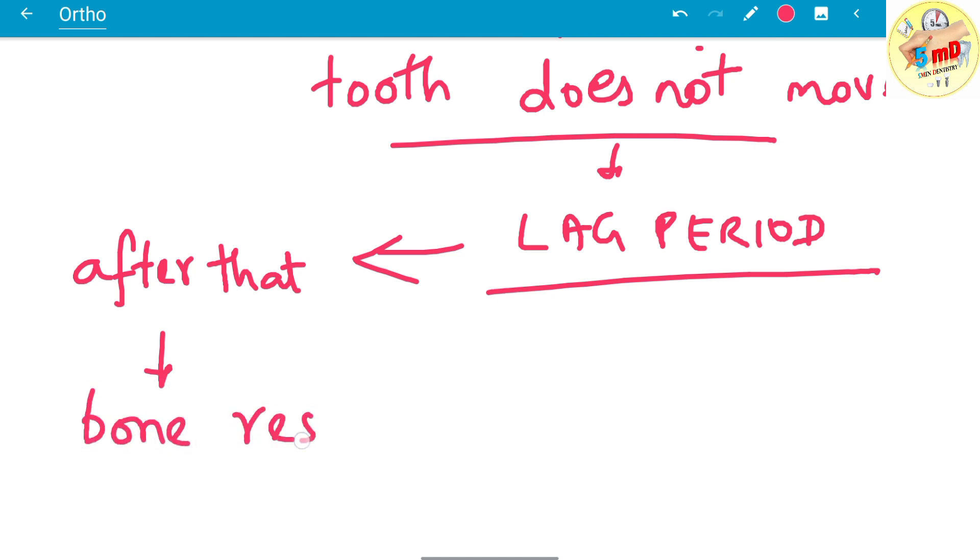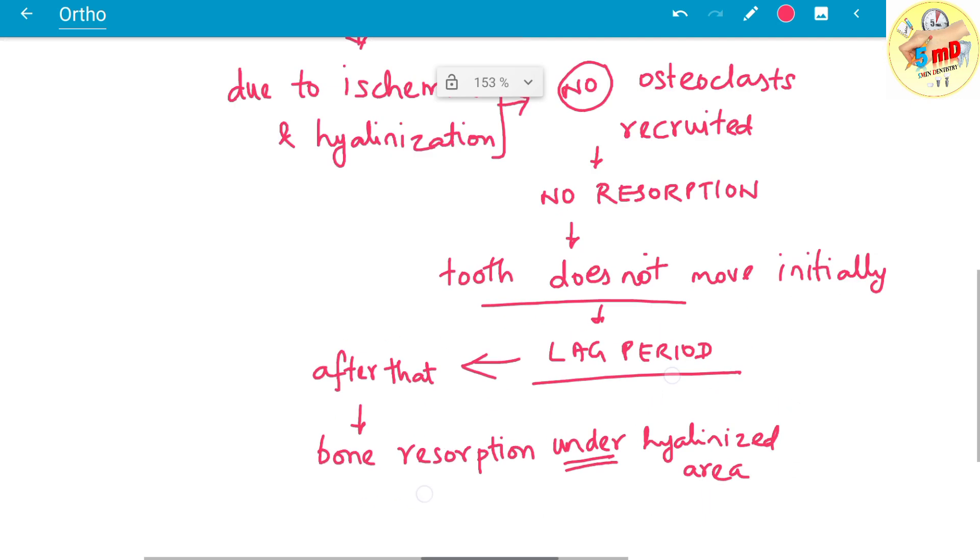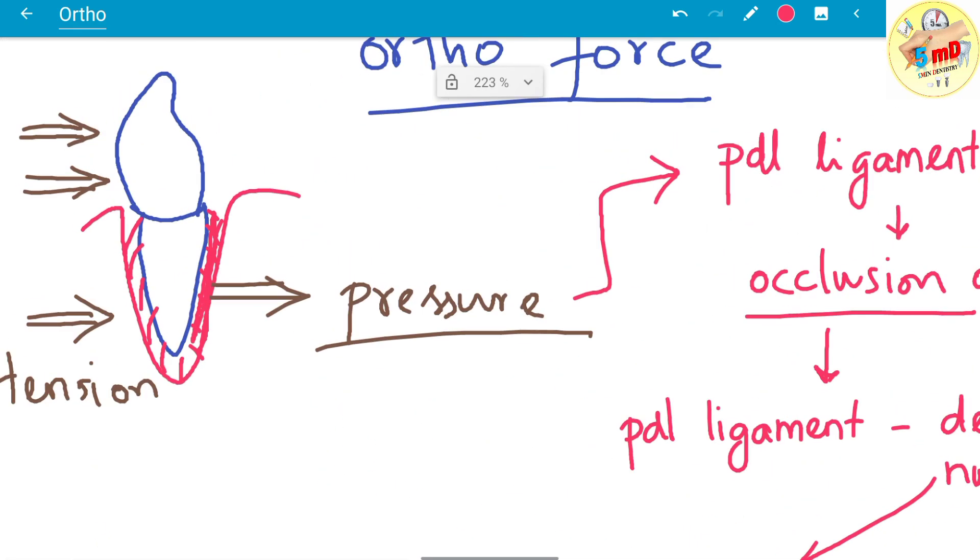This lag period stays for prolonged time than normal. And after that, bone resorption occurs but not in the hyalinized zone which is adjacent to the periodontal ligament. It occurs under the hyalinized zone of the periodontal ligament.